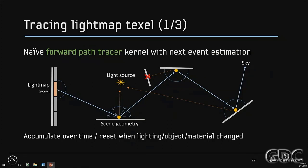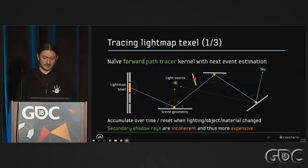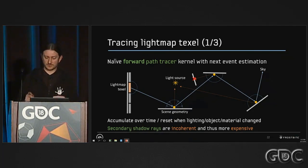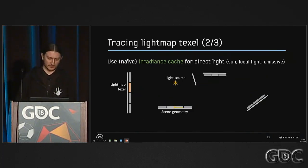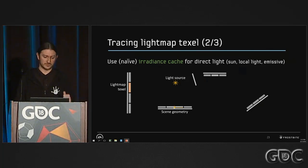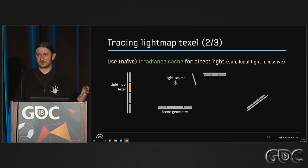We noticed that shadow rays can be expensive, mostly because they are incoherent — they can go in a lot of different directions depending on the hit surface. To accelerate the process, we use a naive irradiance cache for the direct light component, which includes sun, local lights, and emissive. This cache matches exactly the light map resolution, though we could make it higher resolution.